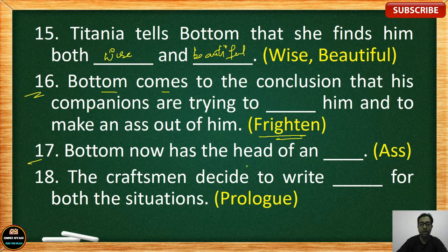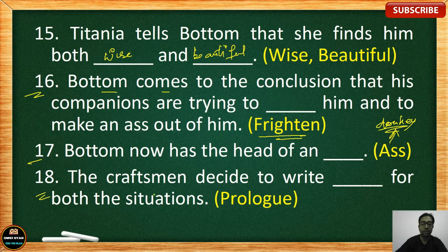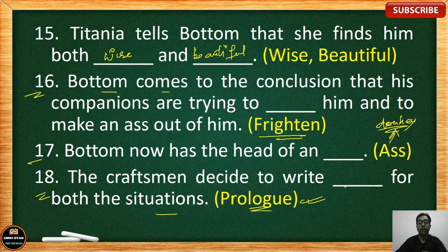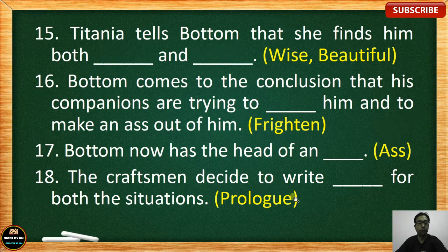Number 17: Bottom now has the head of an ass — ass means donkey. Number 18: The craftsmen decide to write blank for both the situations — the correct answer is 'prologue.' The craftsmen decide to write a prologue for both the situations. So these are your 18 fill in the blanks for Set 2.